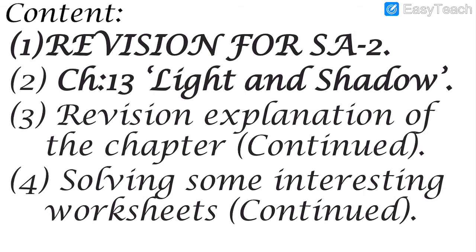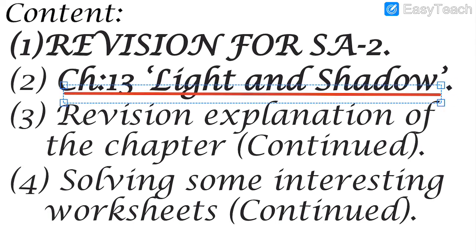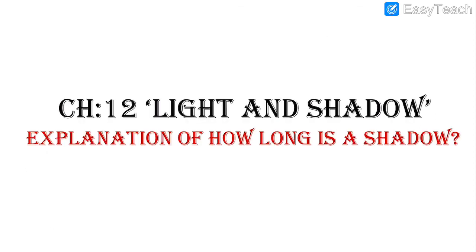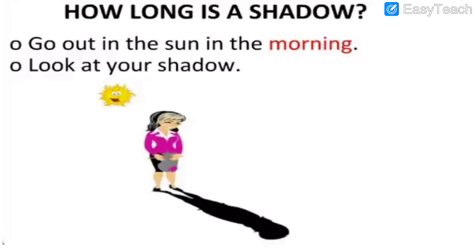Today we will continue with the revision for Class 2, Chapter 13: Light and Shadow. We will revise from where we left off in the previous video and also solve some interesting worksheets. So, Chapter 13 — Light and Shadow. First of all, how long is a shadow? Go out in the sun in the morning.